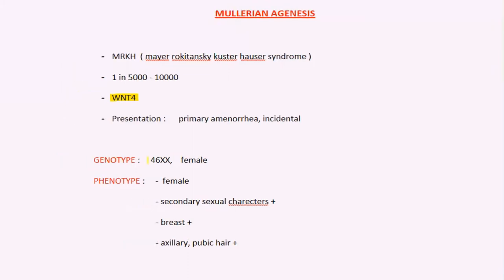Most patients will present with the complaint of primary amenorrhea. Mullerian agenesis is the second most common cause of primary amenorrhea — the first most common cause being Turner's syndrome.